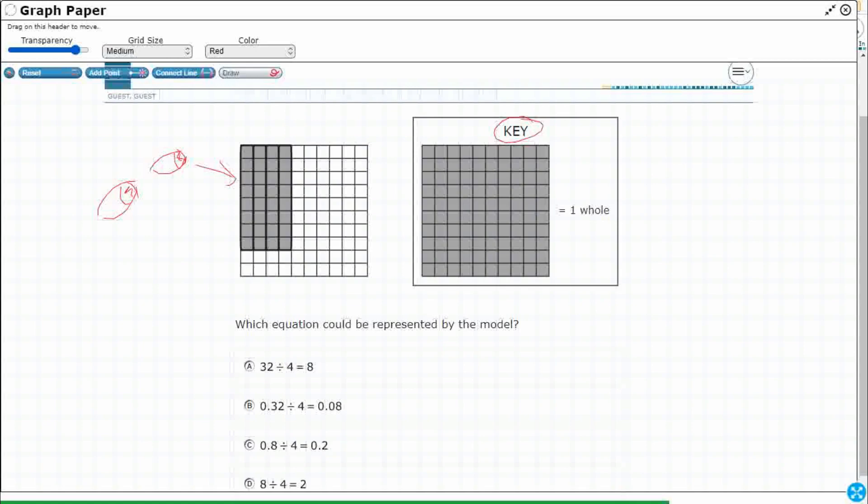So this key tells us that this is one whole. This whole thing right here is one whole and it's broken up into what looks like 100 hundredths. So it's a 10 by 10 grid. We're dealing with hundredths here, or we can put it in decimal form like that because it looks like all of our answers are in decimal form. So there's 100 hundredths there in decimal form.